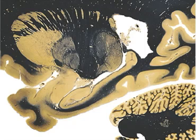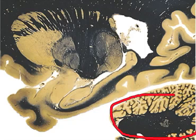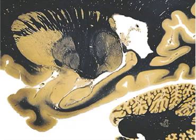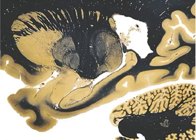This is a sagittal slice through the amygdala and the hippocampus, and I'm going to point out various structures, starting with the cerebellum. Here's the cerebellum right here, and we have the anterior lobe right here, and then the primary fissure right there, and we can see a little bit of the dentate nucleus right here.